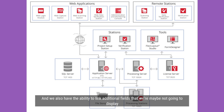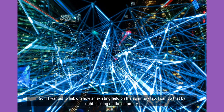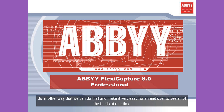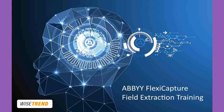We also have the ability to link additional fields that we're maybe not going to display. So if I wanted to link or show an existing field on the summary tab, I can do that by right-clicking on the summary and selecting the proper field that I want to display. This is another way to make it very easy for an end user to see all of the fields at one time.